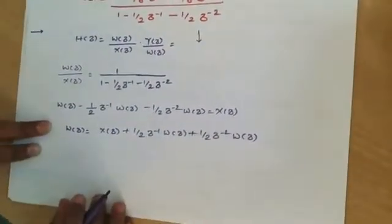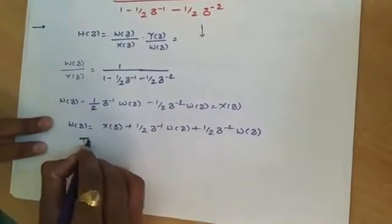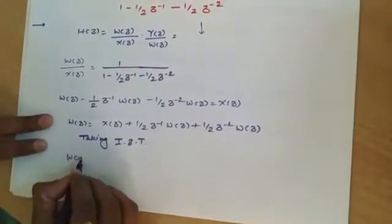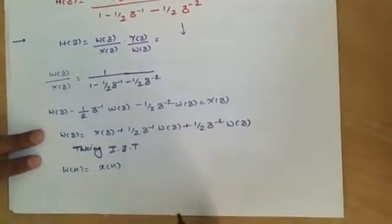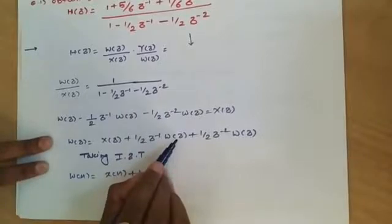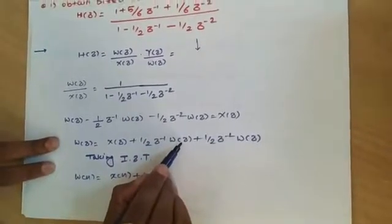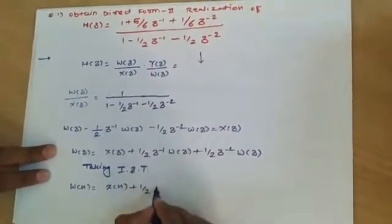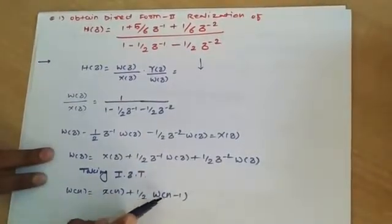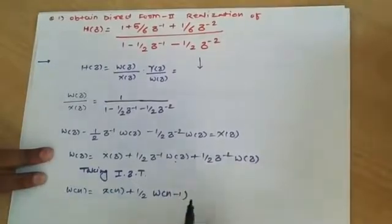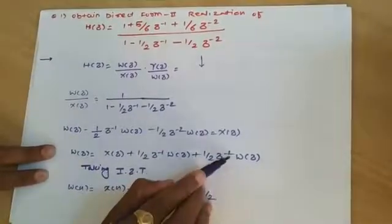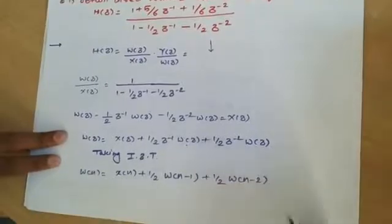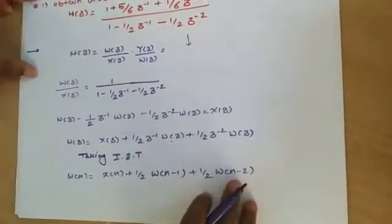Taking the inverse Z-transform: w(n) equals x(n) plus (1/2) times z⁻¹·W(z). Since z⁻¹·W(z) represents a delay by one unit, its inverse Z-transform is w(n−1). The next term is delayed by two units, so we write w(n−2). Thus the time-domain equation is: w(n) = x(n) + (1/2)w(n−1) + (1/2)w(n−2).